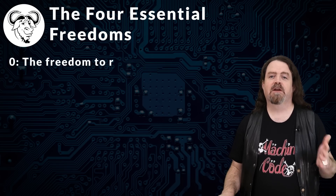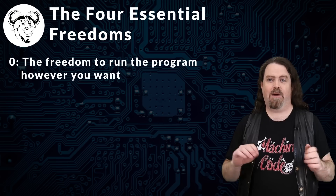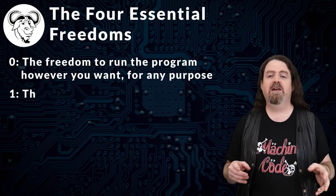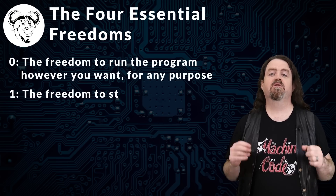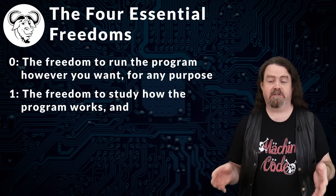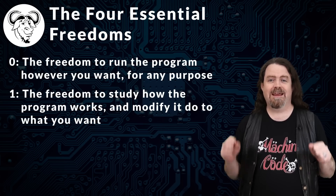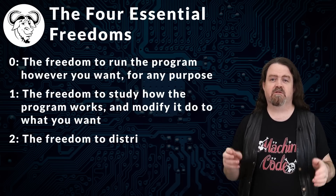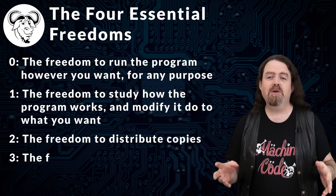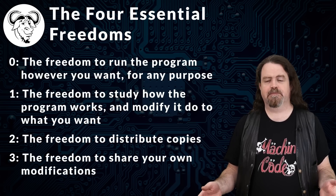Freedom zero: the freedom to run the program however you want for any purpose. Freedom one: the freedom to study how the program works and modify it to do what you want. Freedom two is the freedom to distribute copies, and freedom three is the freedom to share your own modifications.